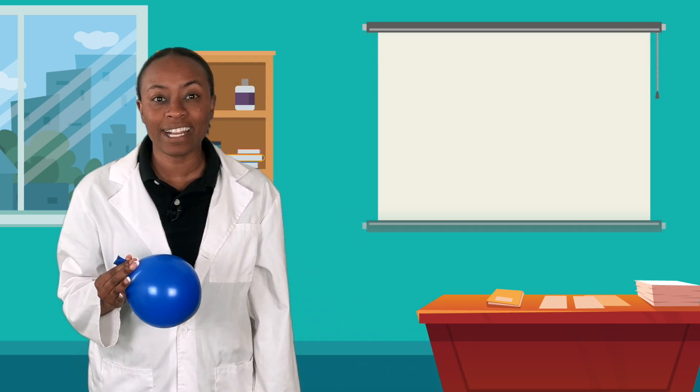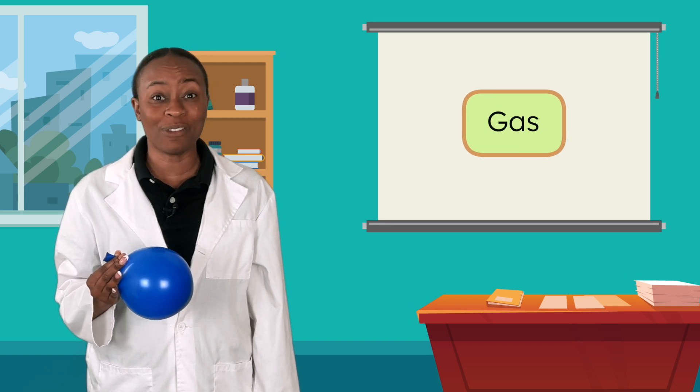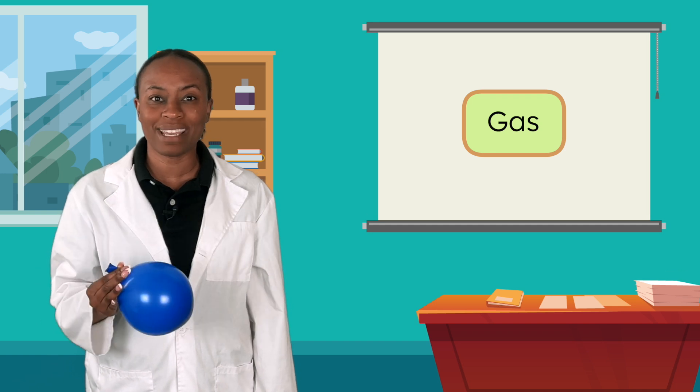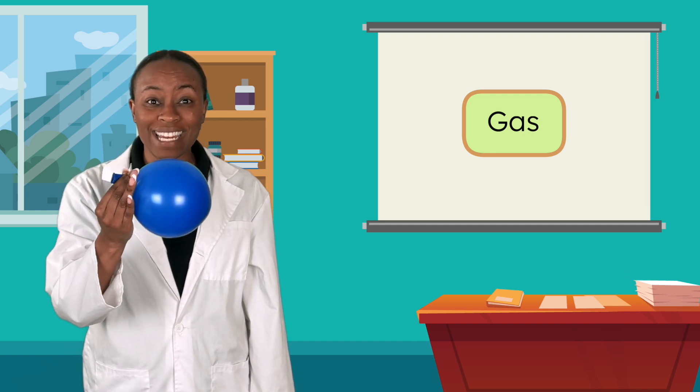Okay, so what is air? I know it's something we can't see. But it's everywhere, all around us. And I know that when I blow up a balloon, there's something inside. What is it? That's right, it's air. Air is a gas, which means it's all around us. Even though we can't see it, it does take up space. Just like it's filling up this balloon right now.